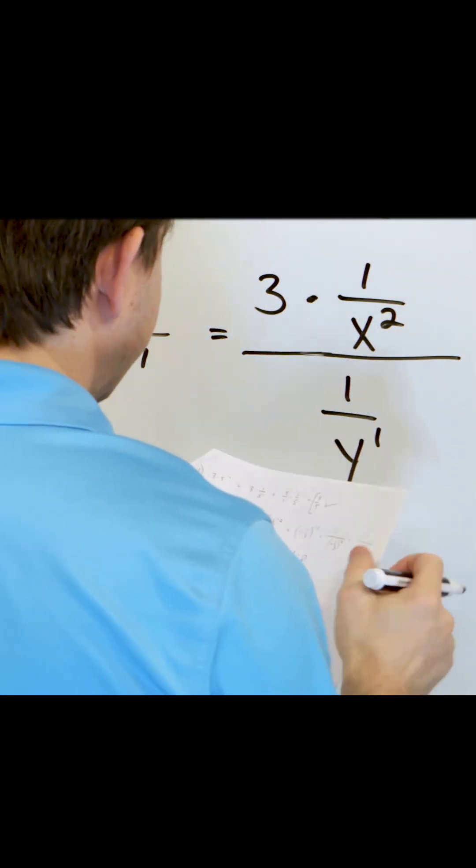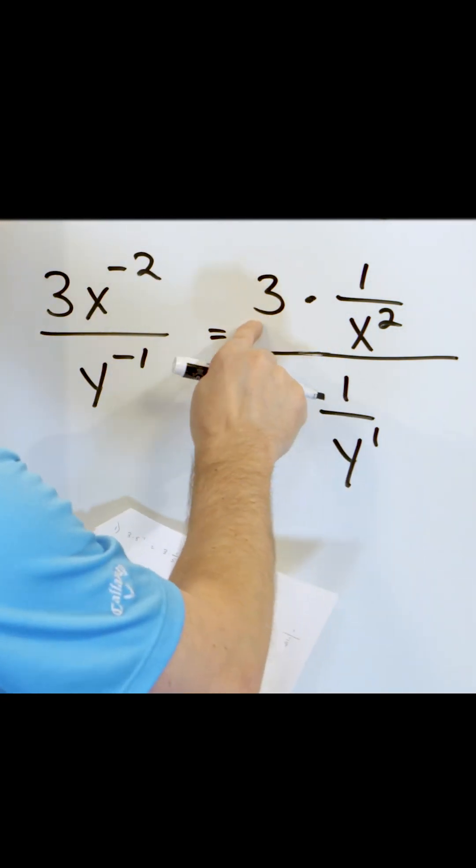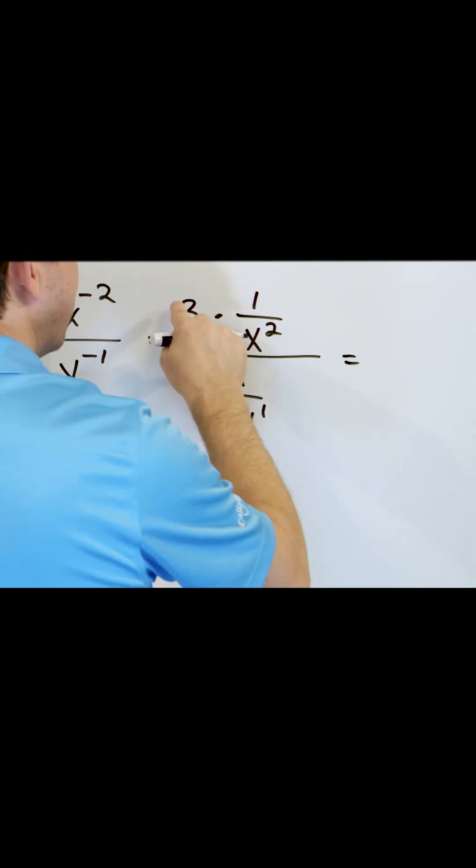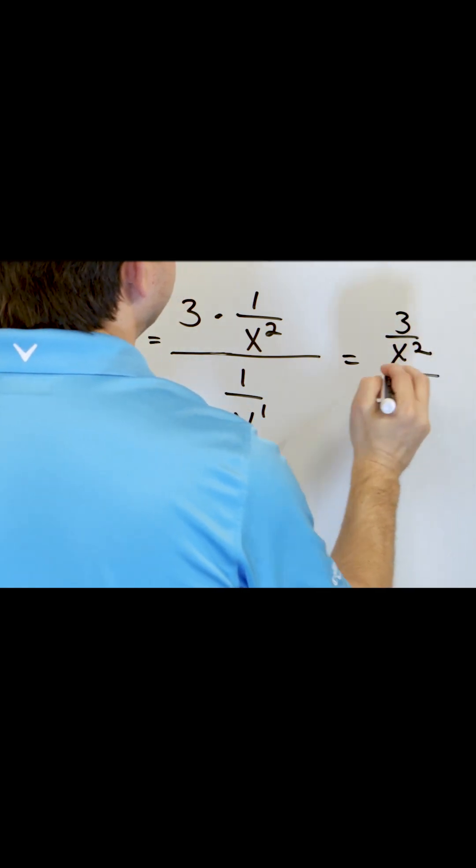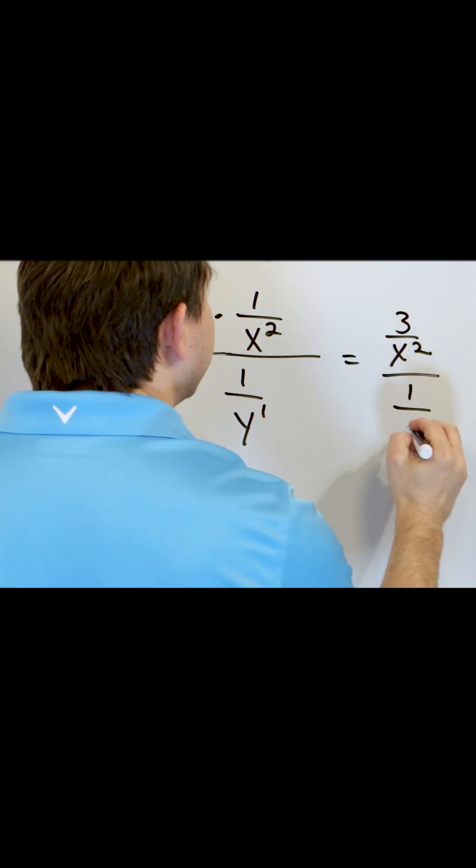Now on the top, it's going to basically be 3 over 1 times this, so you multiply the tops, 3, multiply the bottoms, x squared. On the bottom, you're still going to be stuck with the 1 over y.